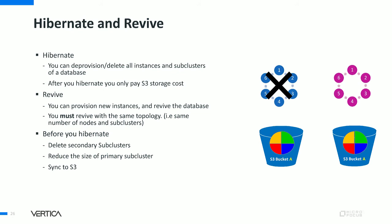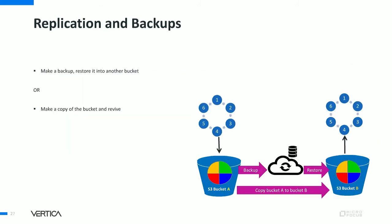Before you hibernate, you must cleanly shut down the database so all data can be synced to S3. Backups and replications are still supported in Eon Mode. Even though S3 has very high reliability, we highly recommend backups. You can backup using the VBR script to another bucket, or copy the bucket and revive a different instance. This is very useful for staging or development databases, and ensures you can recover if something is accidentally deleted.